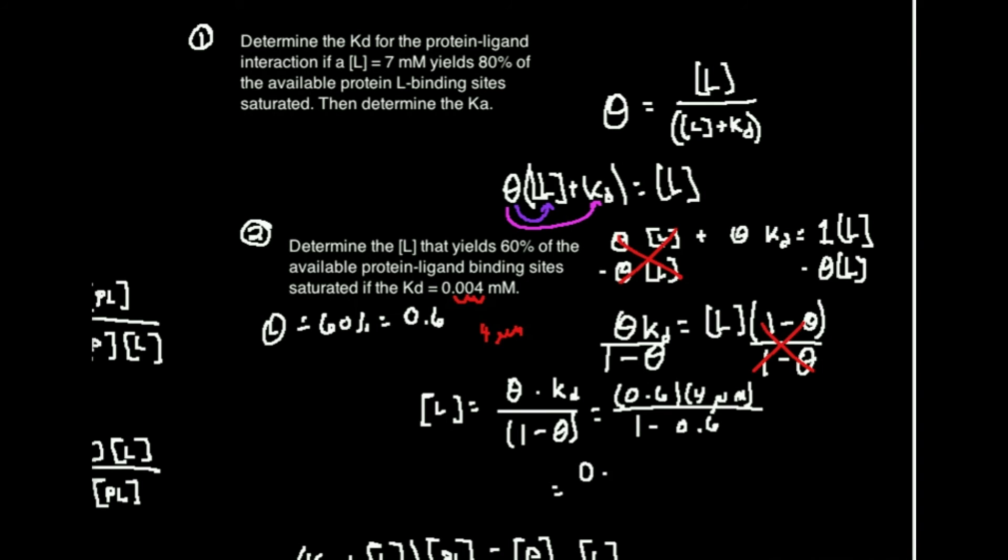If you want to clean this up just a little bit, that's going to be equal to 0.6 times 4 micromolar divided by what's 1 minus 0.6, that's 0.4.